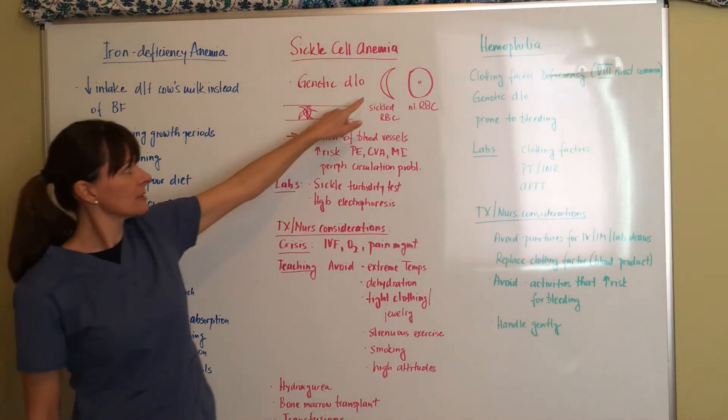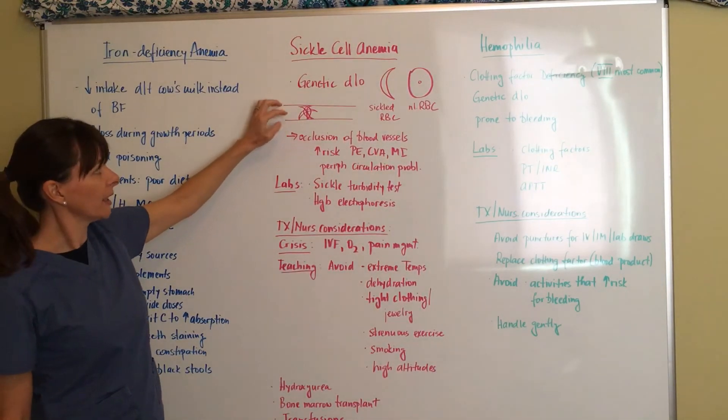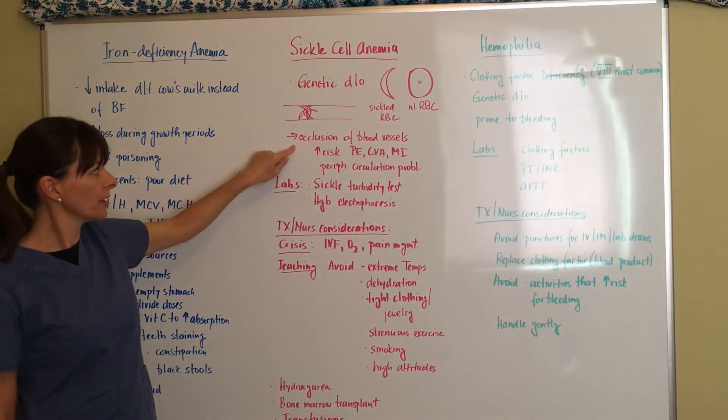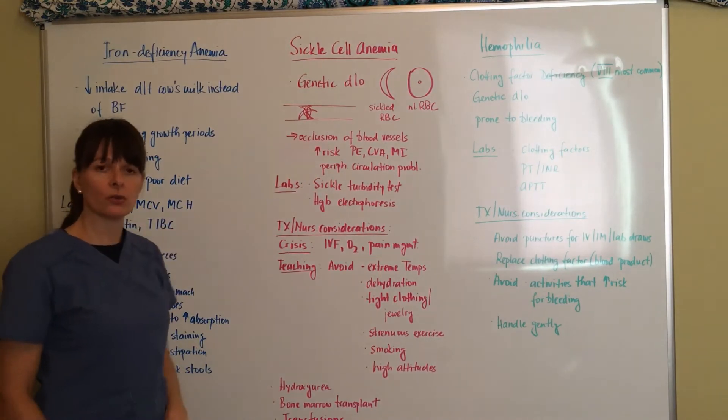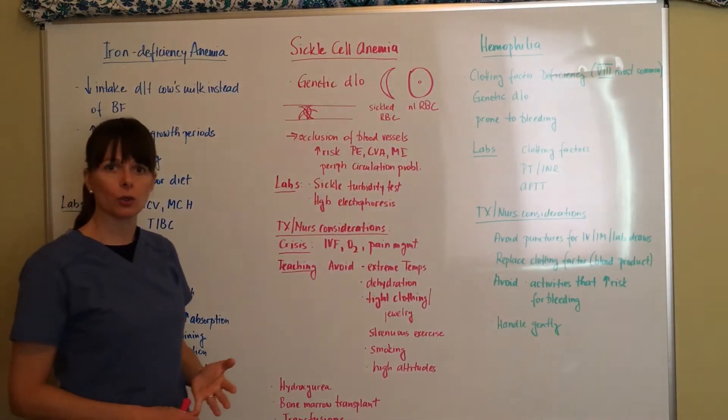These sickle cells in a blood vessel are clumped together and not very pliable. They're very stiff and can cause an occlusion of the blood vessel. This occlusion puts the patient at increased risk for any problems when there's occlusion.